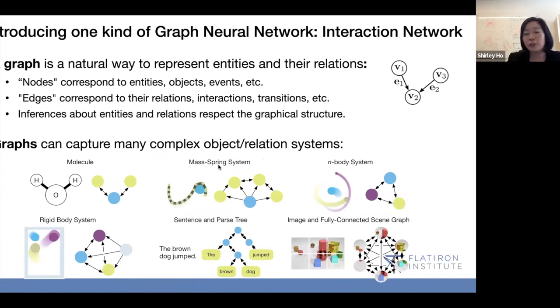And that's the graph network. I just want to quickly explain. It's an interaction network. It's not a graph convolutional network, which a lot of people tend to use traditionally. I don't know why. It is better and has a lot more flexibility. A graph is a natural way to represent entities and the relationship. So you have these nodes, V1, V2, V3. You have these edges, which could be directional or unidirectional. The edges can correspond to the relations, interactions, and transitions. You can infer about entities and relations respecting the graphical structure. And it captures many complex objects and relation systems. Molecules, mass-spring systems.